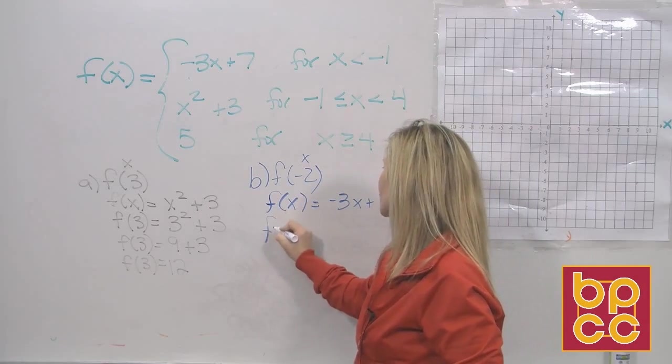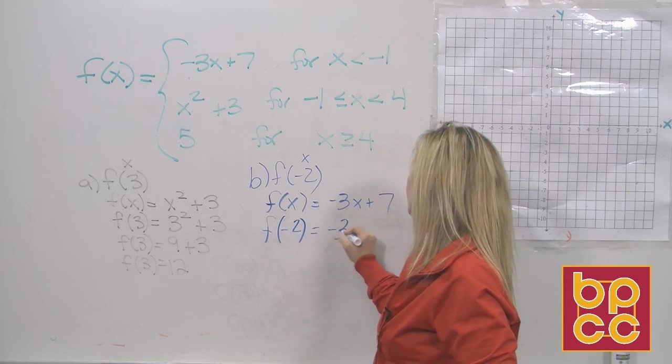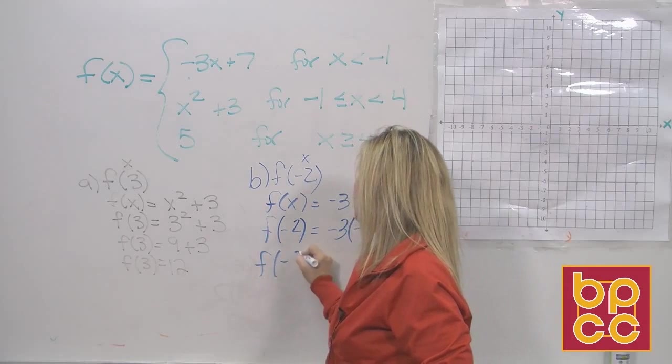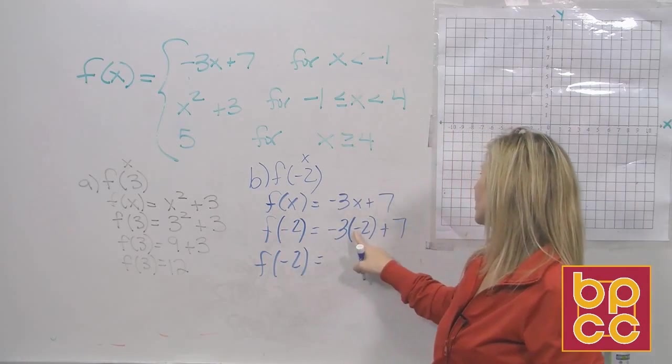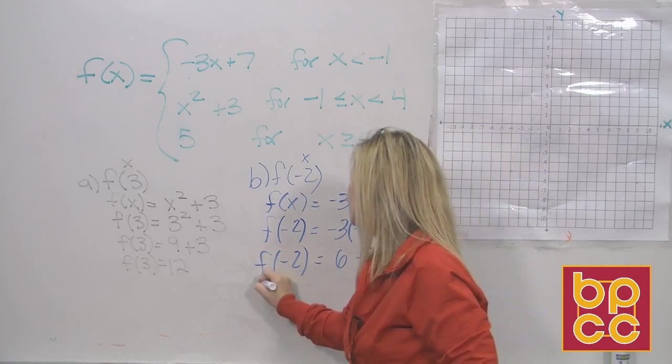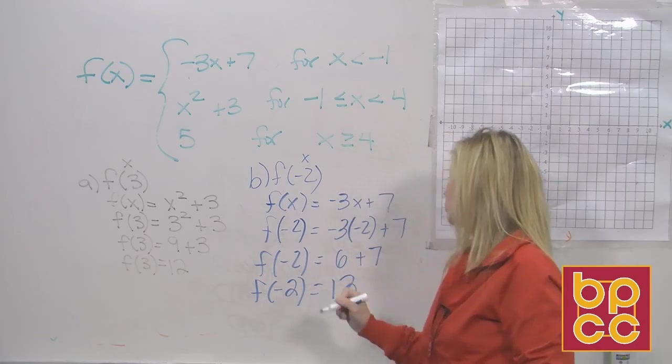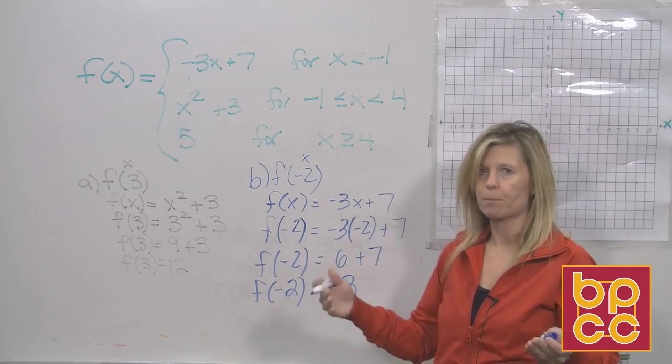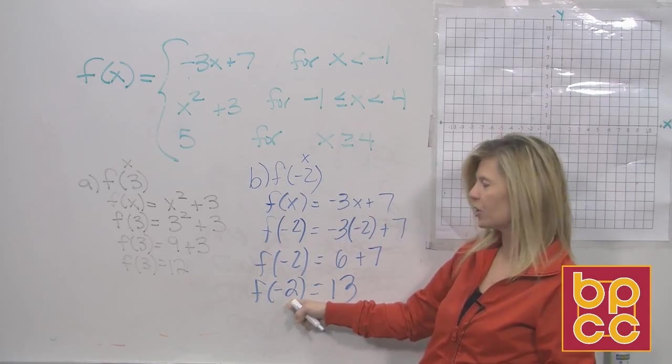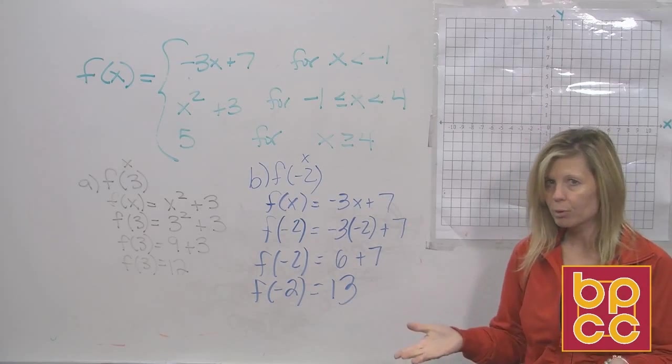f of x equals negative 3x plus 7. What is our x value? Negative 2. That equals negative 3 times negative 2 plus 7. Then we'll do our arithmetic. Negative 3 times negative 2 is 6. 6 plus 7 is 13. So f of negative 2 is 13. You've made another point on f of x. That's his x value, his domain, negative 2. That's his y value, his range, 13. Pretty easy, right? Alright, let's try the third one.